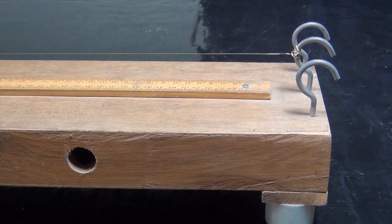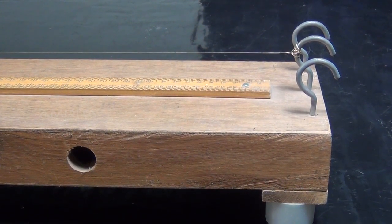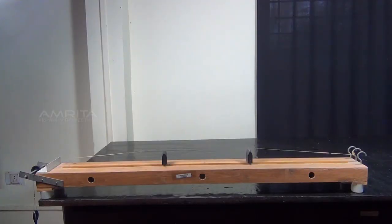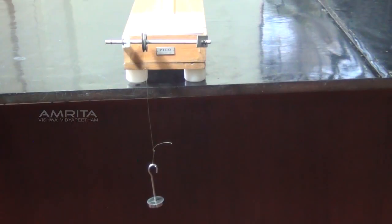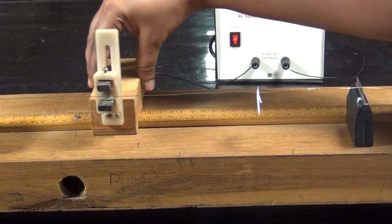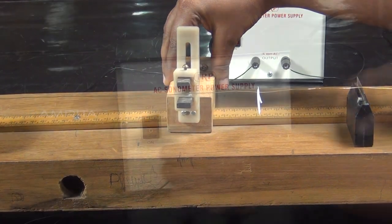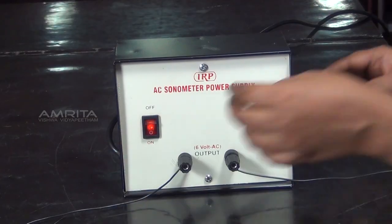A string wire is attached to one end, run over the bridges and pulley and attached to a weight hanger hanging below the pulley. Here, we are using the sonometer to determine the frequency of alternating current.